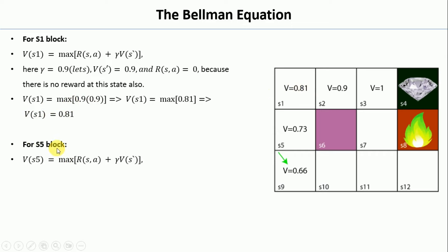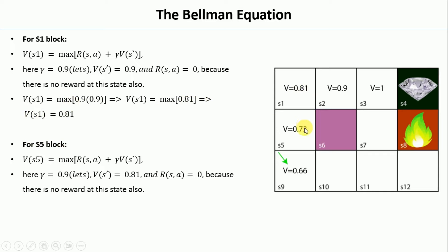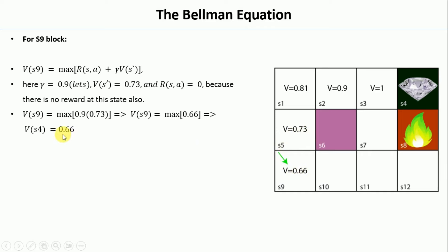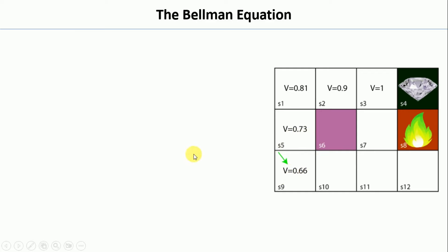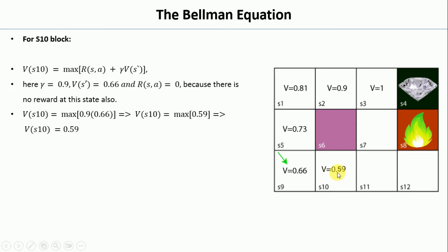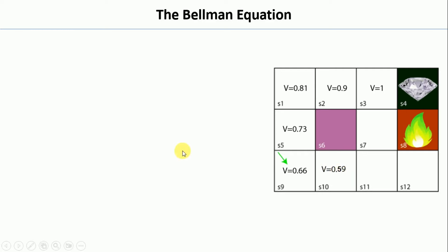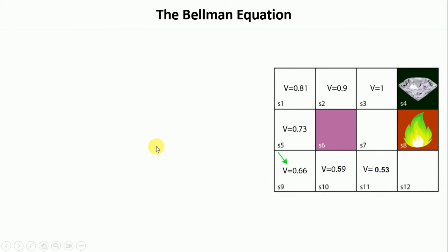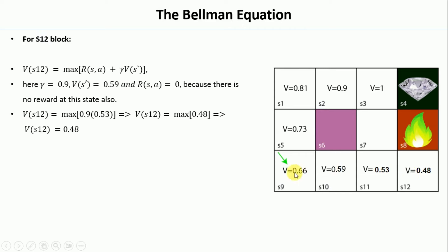Similarly, we calculate V(S5): R_SA is 0 and the previous value is 0.81, so 0.81 * 0.9 = 0.73. For S9, following the same approach we get 0.66. For S10 we get 0.59, for S11 we get 0.53, and for S12 we get 0.48. I have gone through this particular path and obtained all the values.